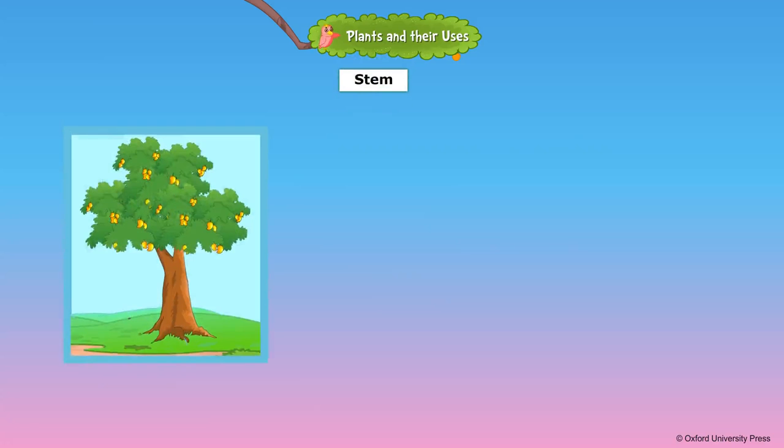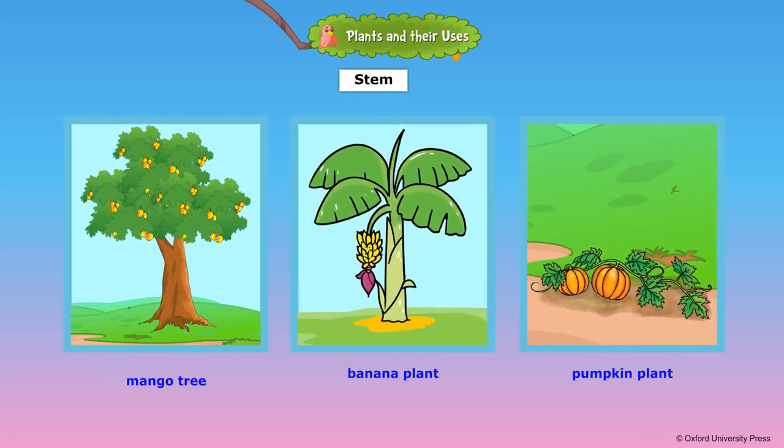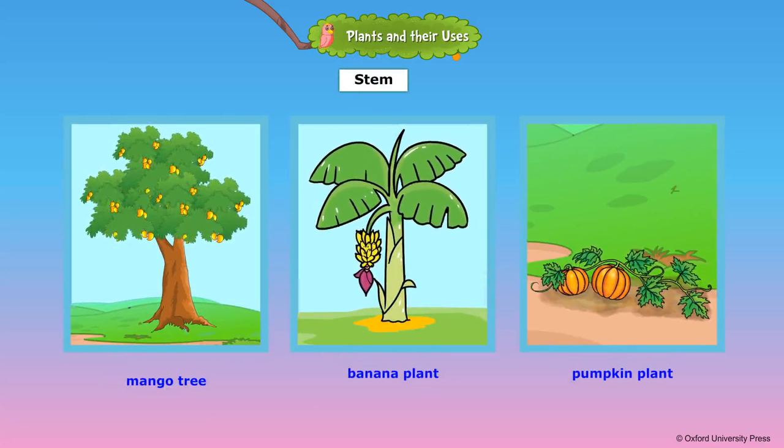The stem is the main part of the shoot system. It holds the plant upright. It supports the branches, leaves, buds, flowers and fruits.